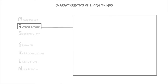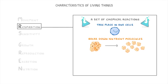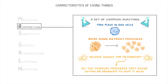Next up we have Respiration. This is a set of chemical reactions that take place in our cells in order to break down nutrient molecules like sugars and release energy that we can use for metabolism. Metabolism refers to all of the chemical processes that occur within an organism to keep it alive — basically all the reactions going on inside us all the time — and respiration is what provides the energy needed for all those reactions.